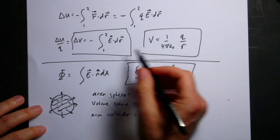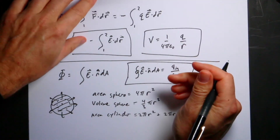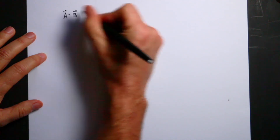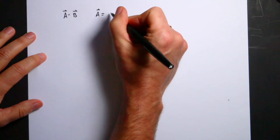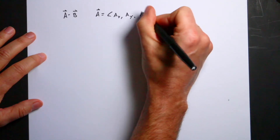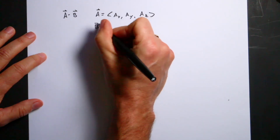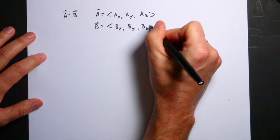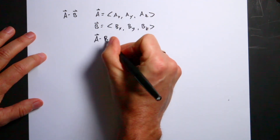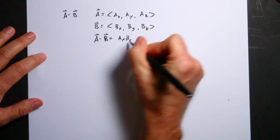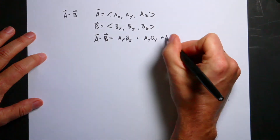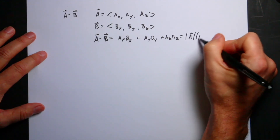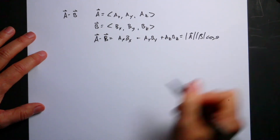You could also write down the dot product. If a = (ax, ay, az) and b = (bx, by, bz), then a·b = ax·bx + ay·by + az·bz, which also equals |a||b|cos(θ), where θ is the angle between them.